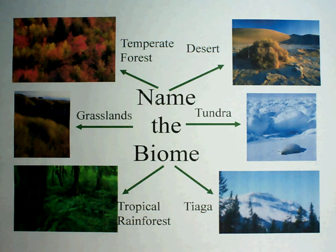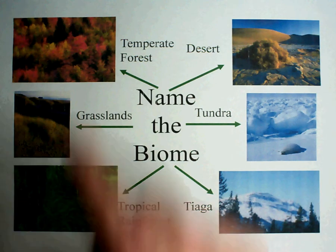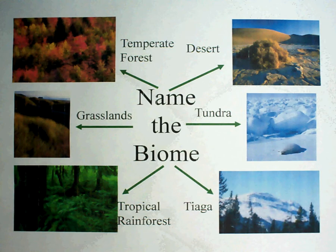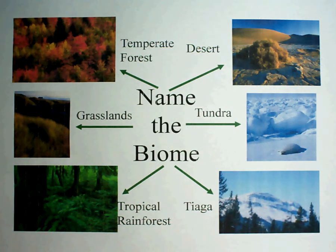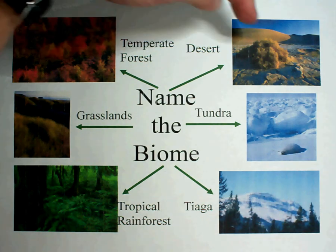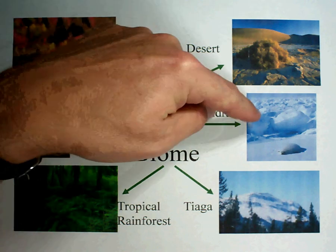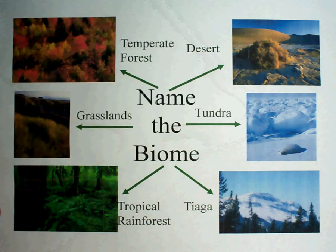In this lesson we're going to talk about ecology and biomes. You'll notice from this first picture there are six biomes in the world — these are the areas in which organisms can live: the temperate forest, the desert, grasslands, tundra, tropical rainforest, and the taiga.